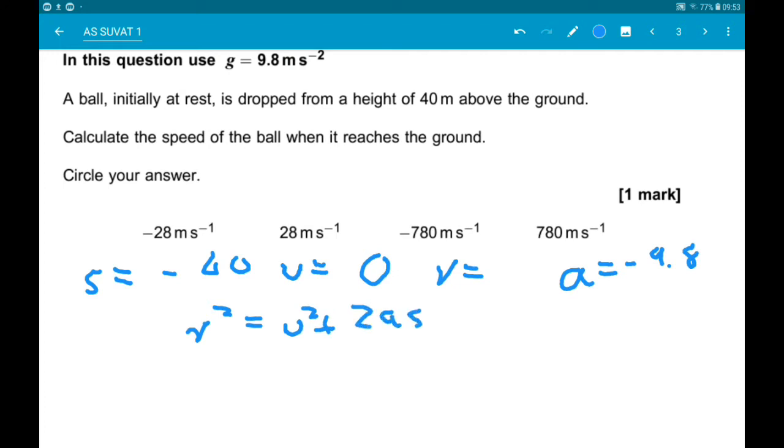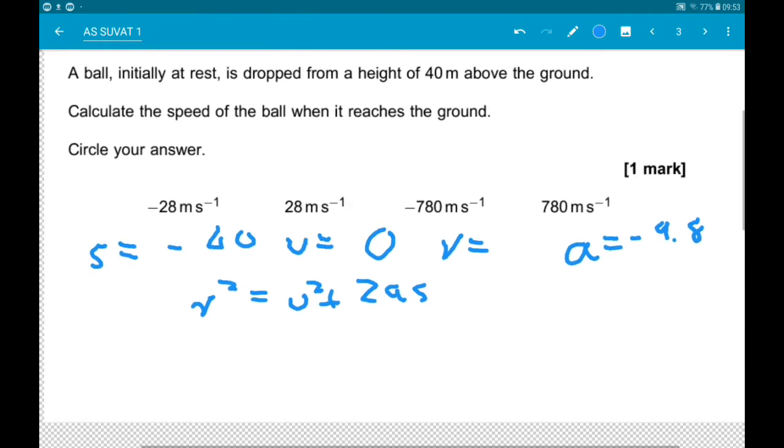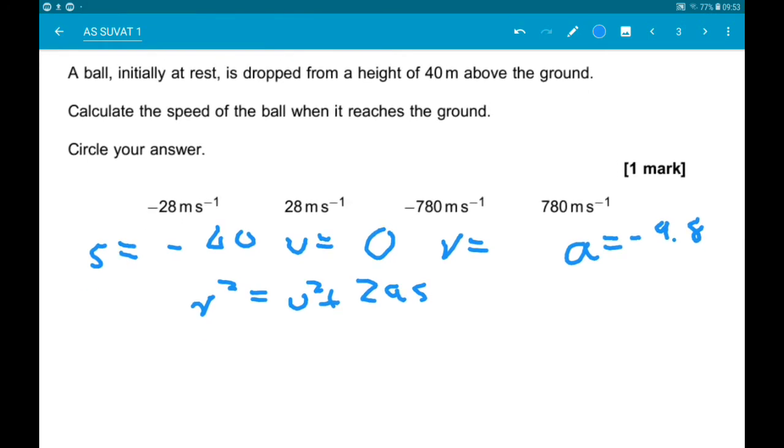So U squared is just zero. So V squared is 2 times minus 9.8 times minus 40.